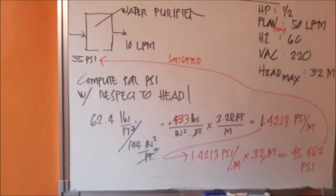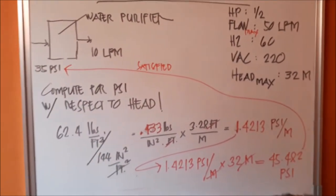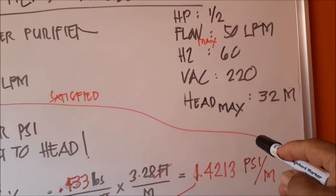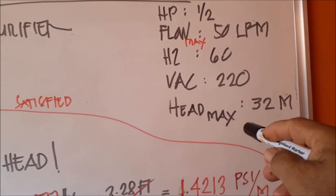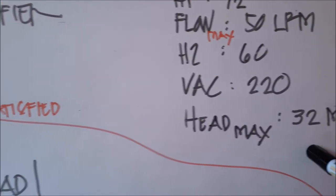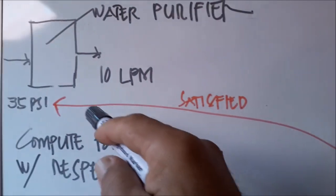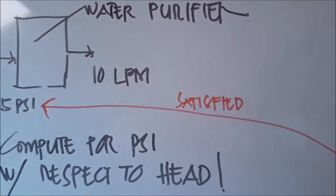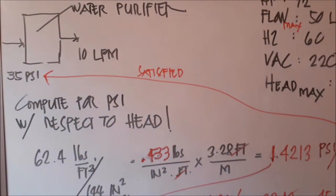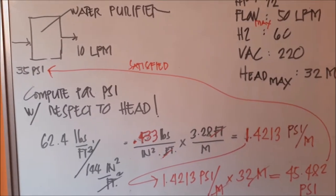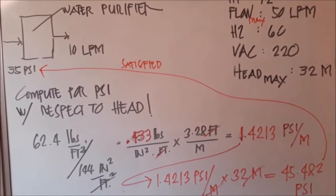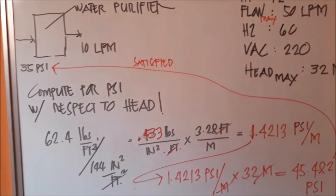So let's compute. We have 32 meter head here. Is this the right spec, one-half, to buy and match to the water purifier? Let's go to conversion from head, convert it to PSI.